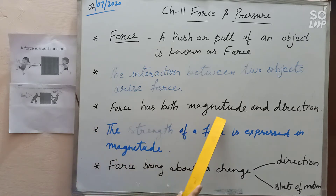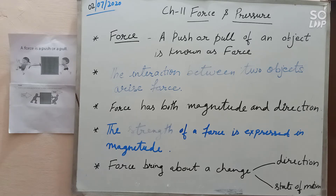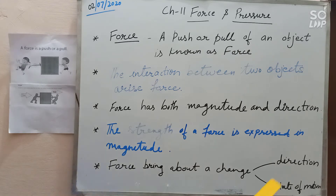Force has both magnitude and direction. Magnitude means the strength — how much value the strength of the force is expressed in magnitude. The unit of force is Newton. So how much Newton we apply on an object — like 3 Newton — 3 is the magnitude of the force. Then force brings about a change: when we apply force on an object it will change the direction as well as the state of motion of that object.